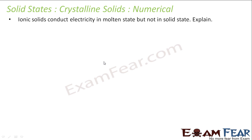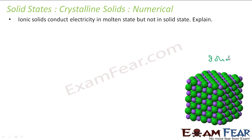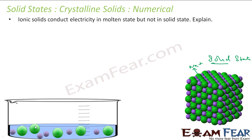Why do ionic solids conduct electricity in molten state but not in solid state? In the solid state, Na⁺ and Cl⁻ ions are tightly bound and cannot move, so there are no free ions or electrons to conduct electricity. In the molten or aqueous state, the ions break apart and are free to move, so they conduct electricity.